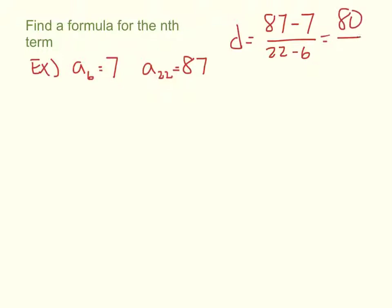So 80 over 16 is 5. All right, now it doesn't matter which point we choose to use in the formula, we'll get the same answer.